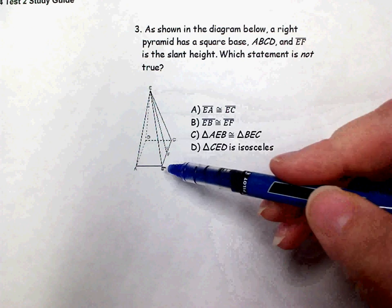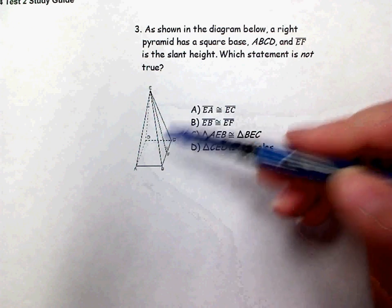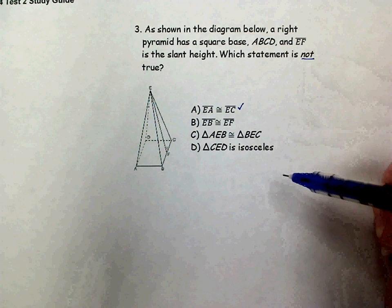Segments going from the apex to each one of the vertices would be congruent to each other. So that is true and we're looking for what's not true.